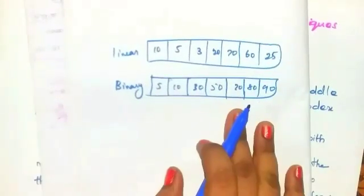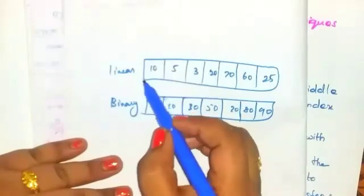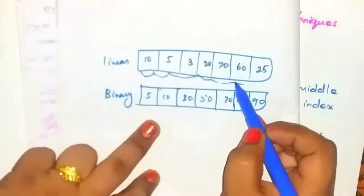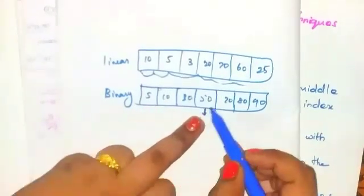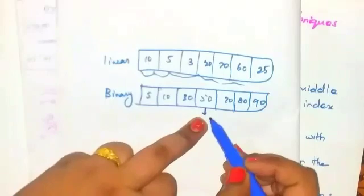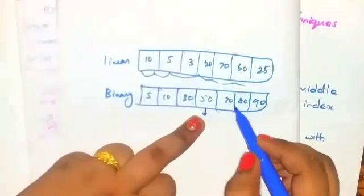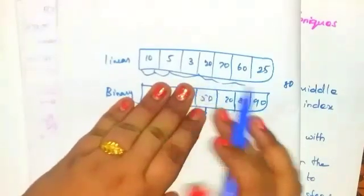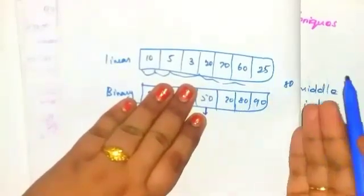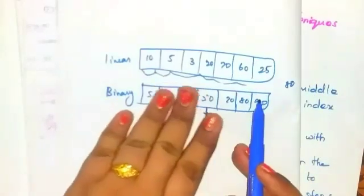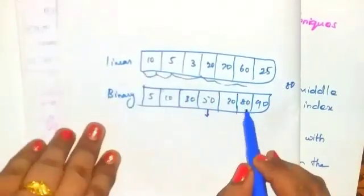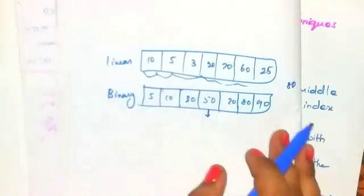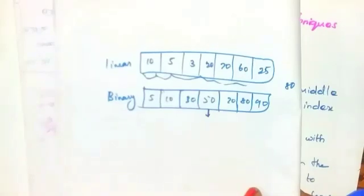Another difference is that in linear search we search the element from the beginning one by one, so it takes more time. But in binary search you start your search from the middle element. For example, if you want to search the number 80, you can skip the left-side elements because 80 is on the right side of the middle element, so it takes less time.